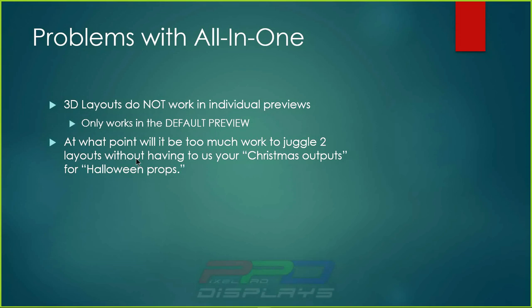At what point does it become too much work to juggle two layouts inside one show folder when your Christmas outputs and Halloween props start to collide and you have to buy more controllers? Controllers are the expensive thing in this hobby. Pixels are expensive too, but we don't think about buying controllers as much. As soon as you buy another controller, that's probably $300, $400, or $500 to invest — either having somebody build it or building one yourself.